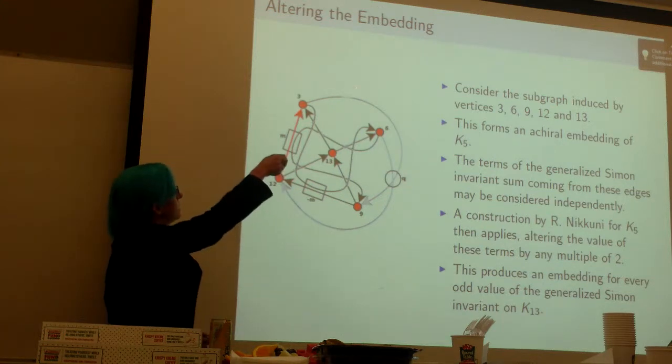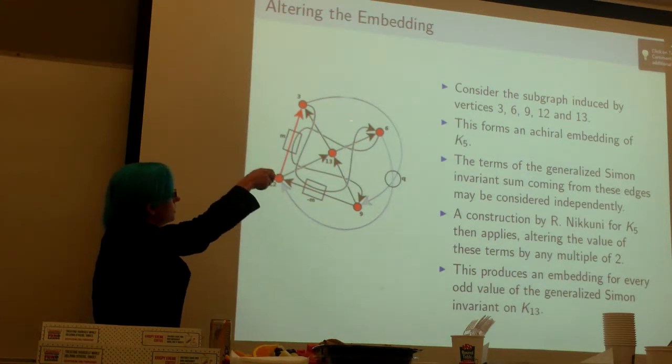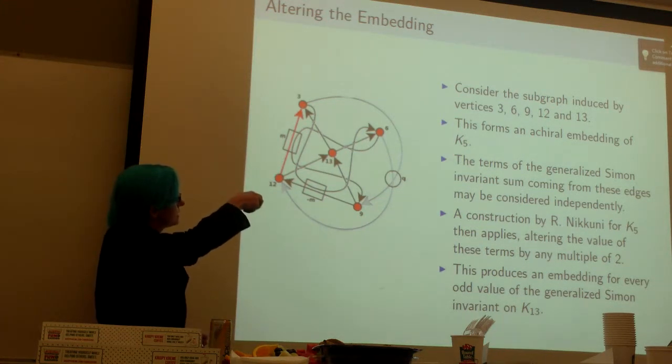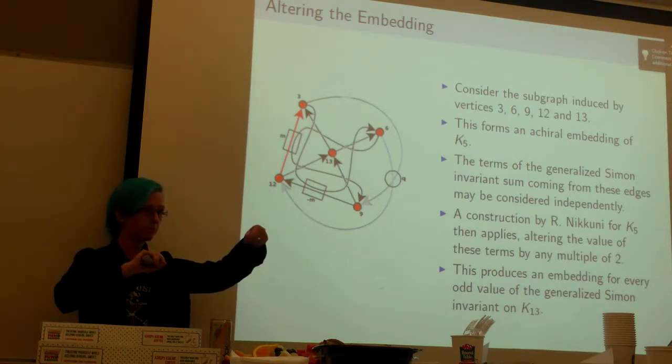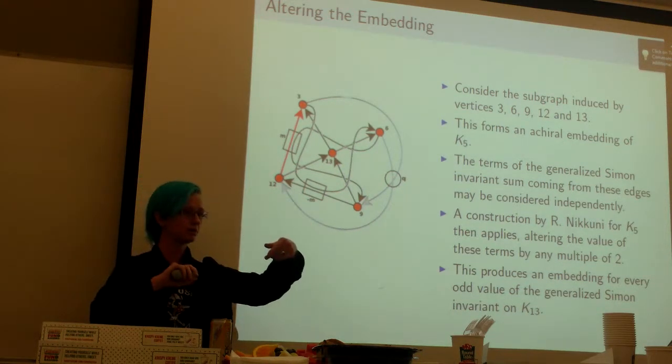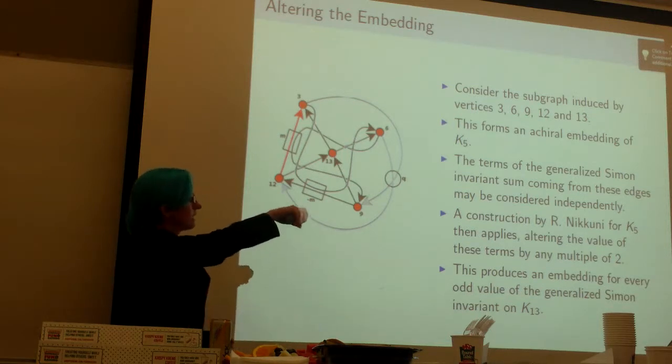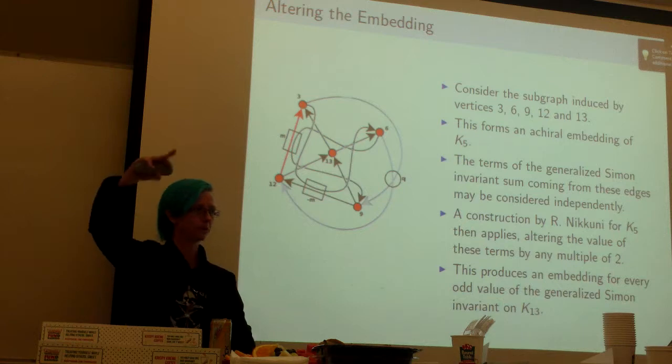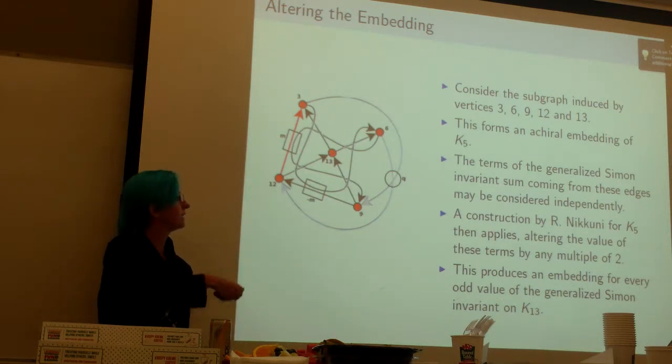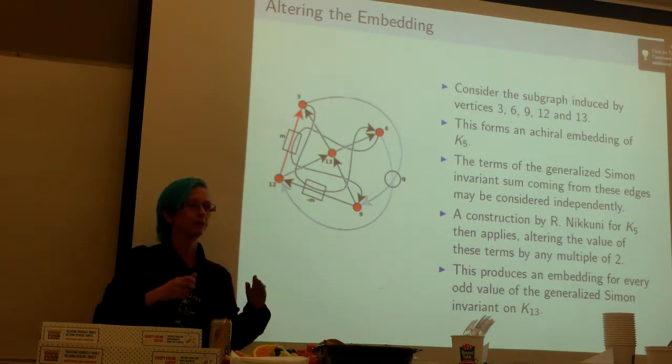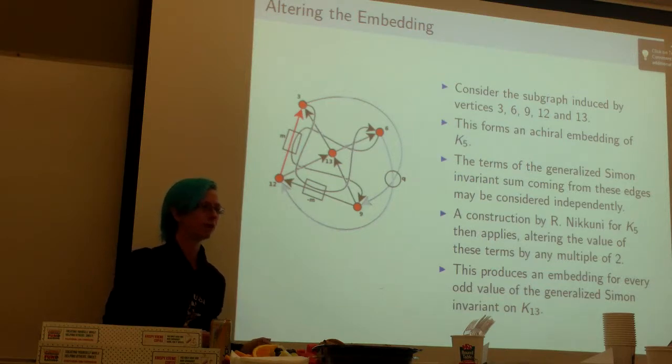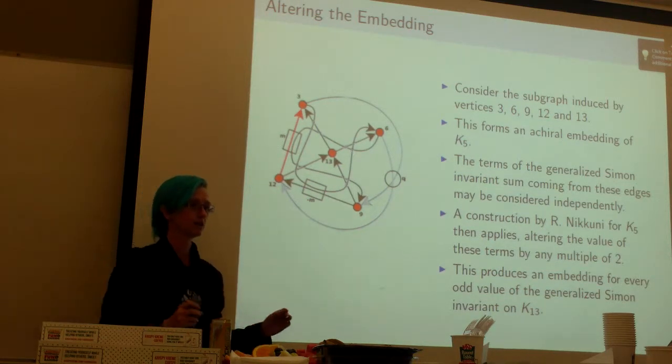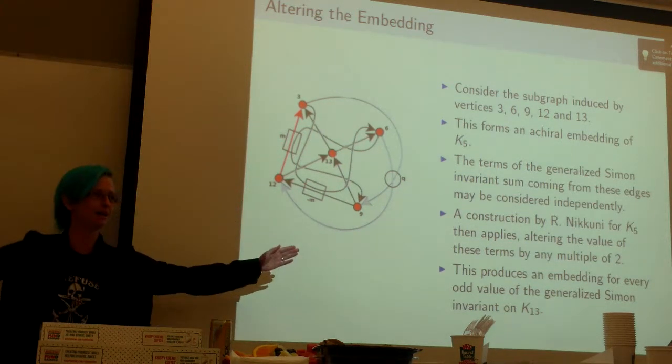Then you can take these edges and pull them over, make these little areas in which you can twist them up as many times one way or the other as you want. And at the same time take the two that are going all the way across and switch which one's on top. By doing this, when you twist them, you change the invariant value by 4 for each twist. So you can get half of the odd numbers that way.